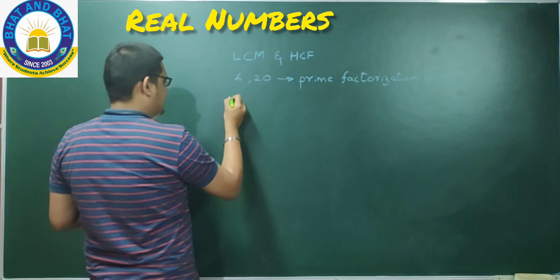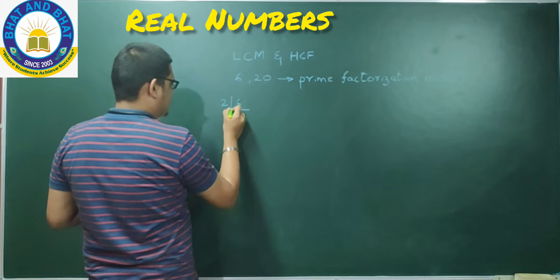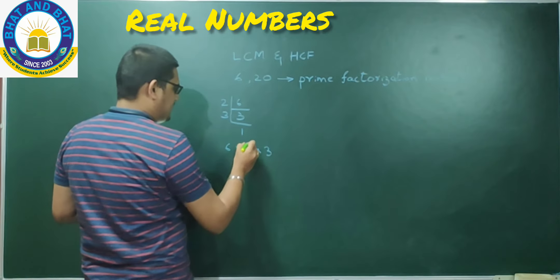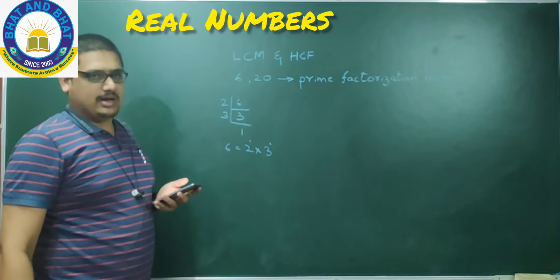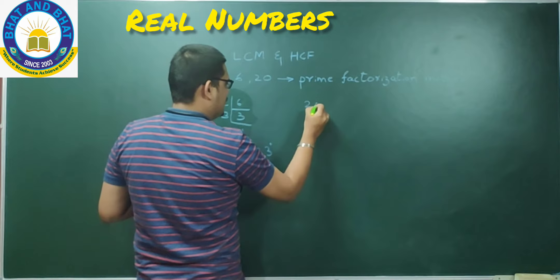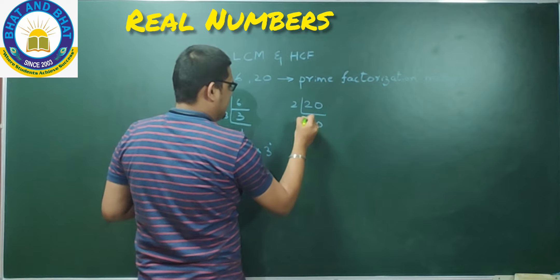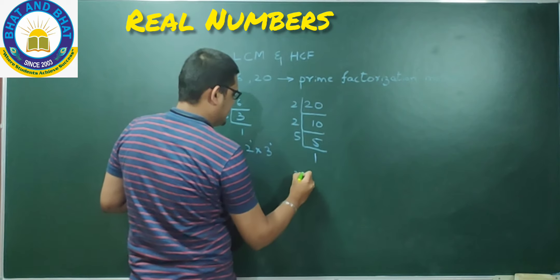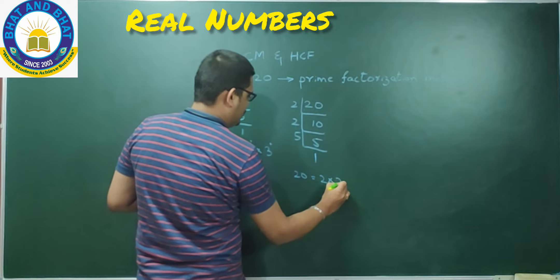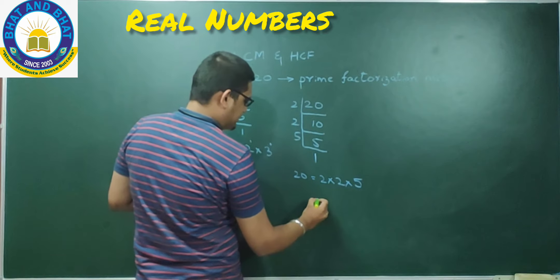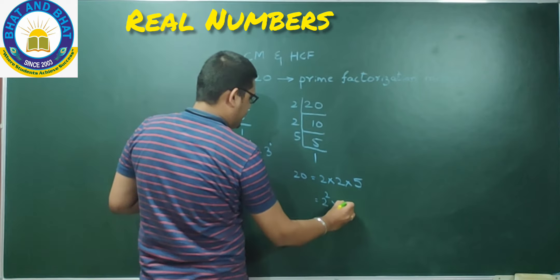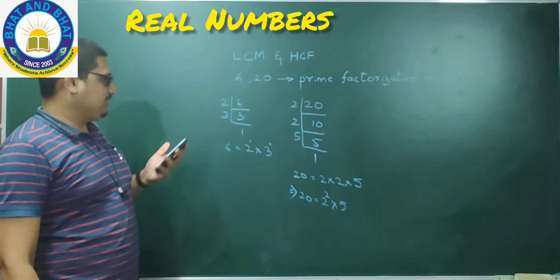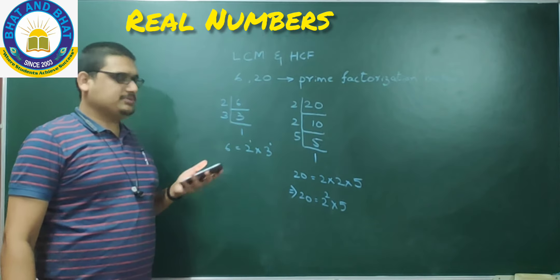Let us take the first given number, which is 6. If I try to express it: 2 threes are 6, 3 ones are 3. So I can say 6 is equal to 2 into 3, or rather 2 power 1 into 3 power 1. Similarly, if I take the second given number 20: 2 tens are 20, 2 fives are 10, 5 ones are 5. So 20 is equal to 2 into 2 into 5, which I can express as 2 power 2 into 5. I have taken the numbers individually and expressed them in terms of their prime factors.